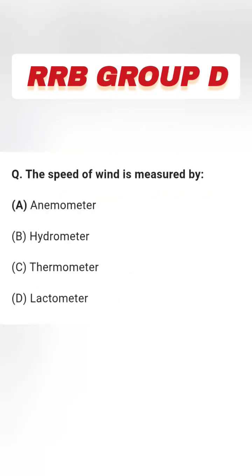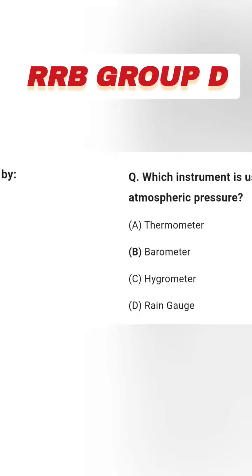Next question: The speed of wind is measured by — anemometer, hydrometer, thermometer, lactometer. The right answer is option A, anemometer.